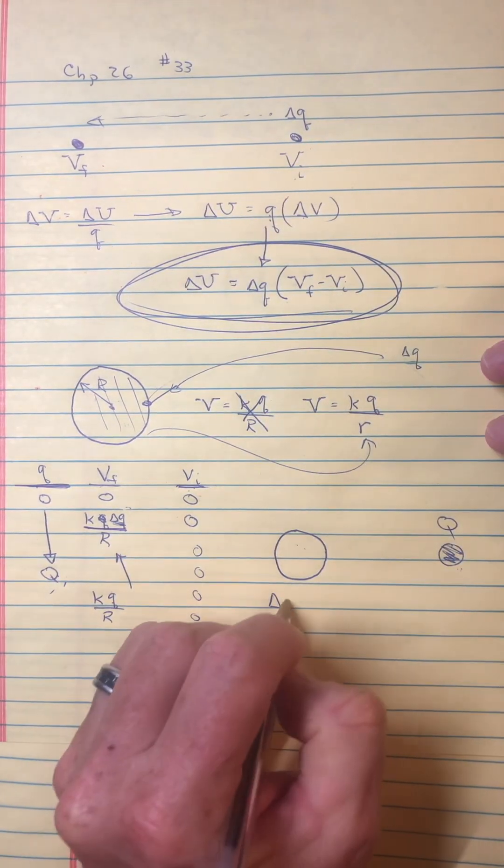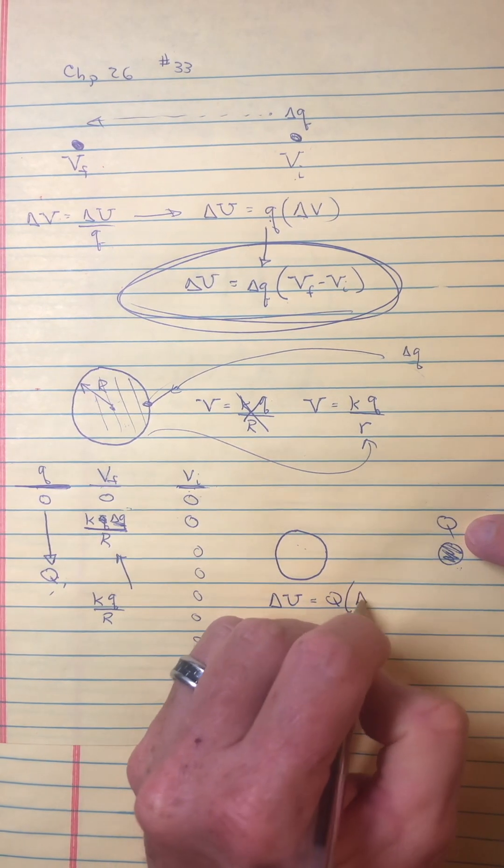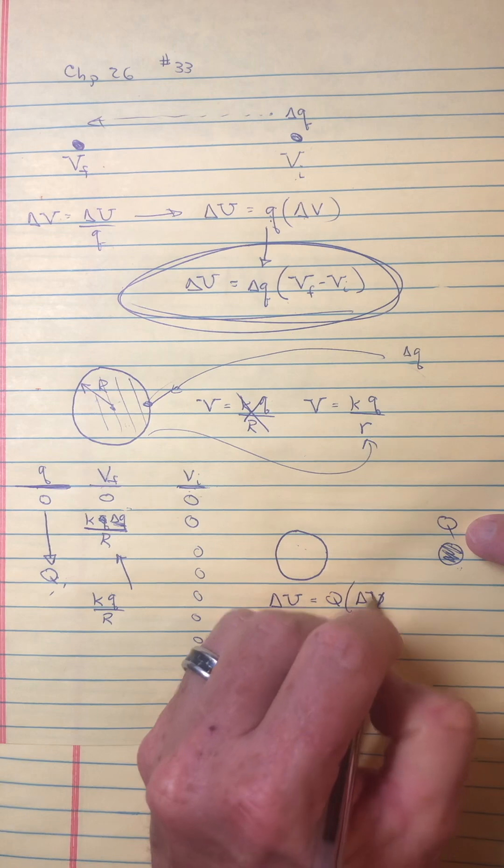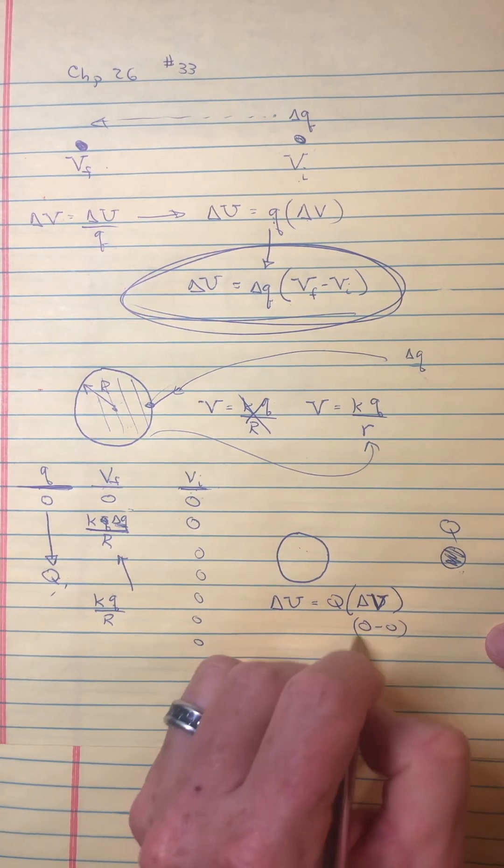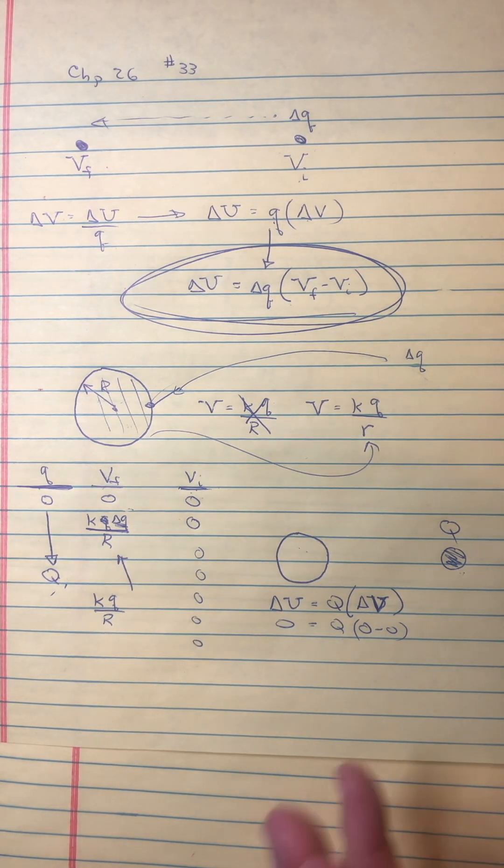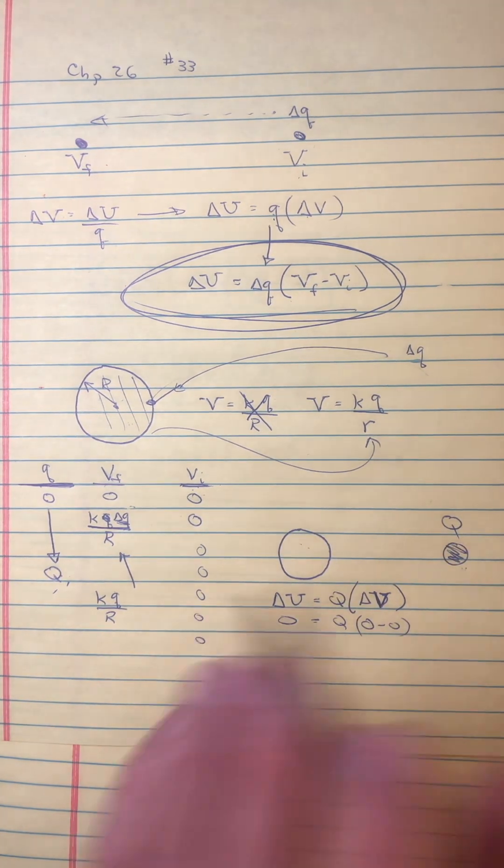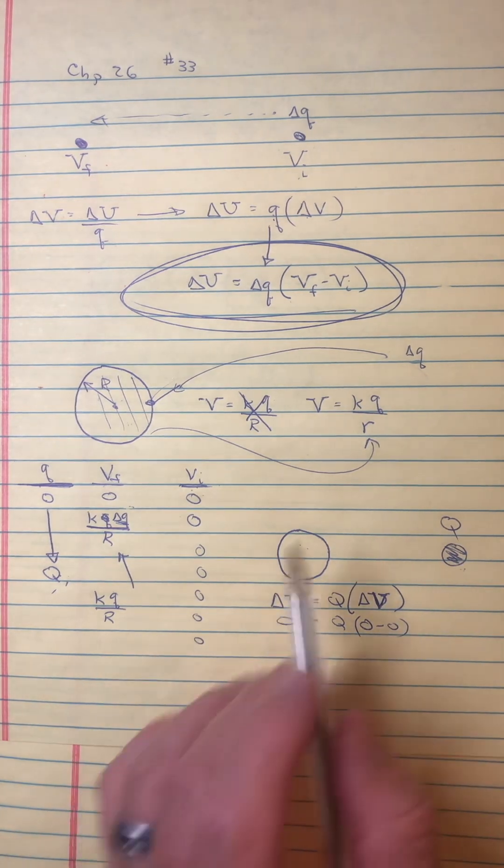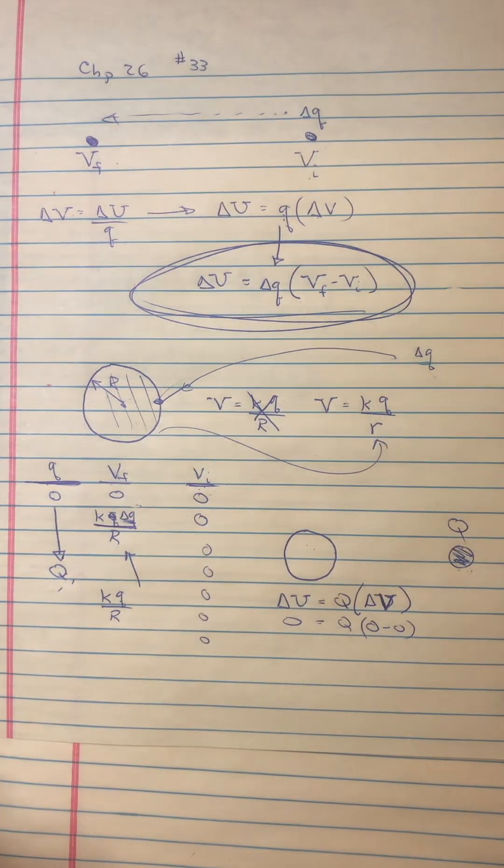And you're not really calculating how much energy it took to assemble a charge of Q. You already have it assembled here. You're just saying how much energy does it take for me to move an already assembled charge of Q to a new location. And if there's no charge you're going to say well the delta U would be Q times your change in potential, which would just be zero minus zero. And of course you're going to say it takes no energy. But you are not really answering the question when you do that. You're not saying how much energy it took to assemble the Q.